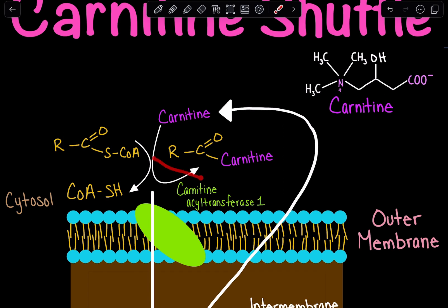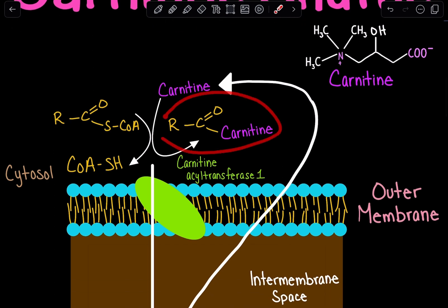Carnitine forms that bond, and then we get the structure of acyl-carnitine. Why do we do that? Because carnitine is going to facilitate the transport of our fatty acid into our matrix.